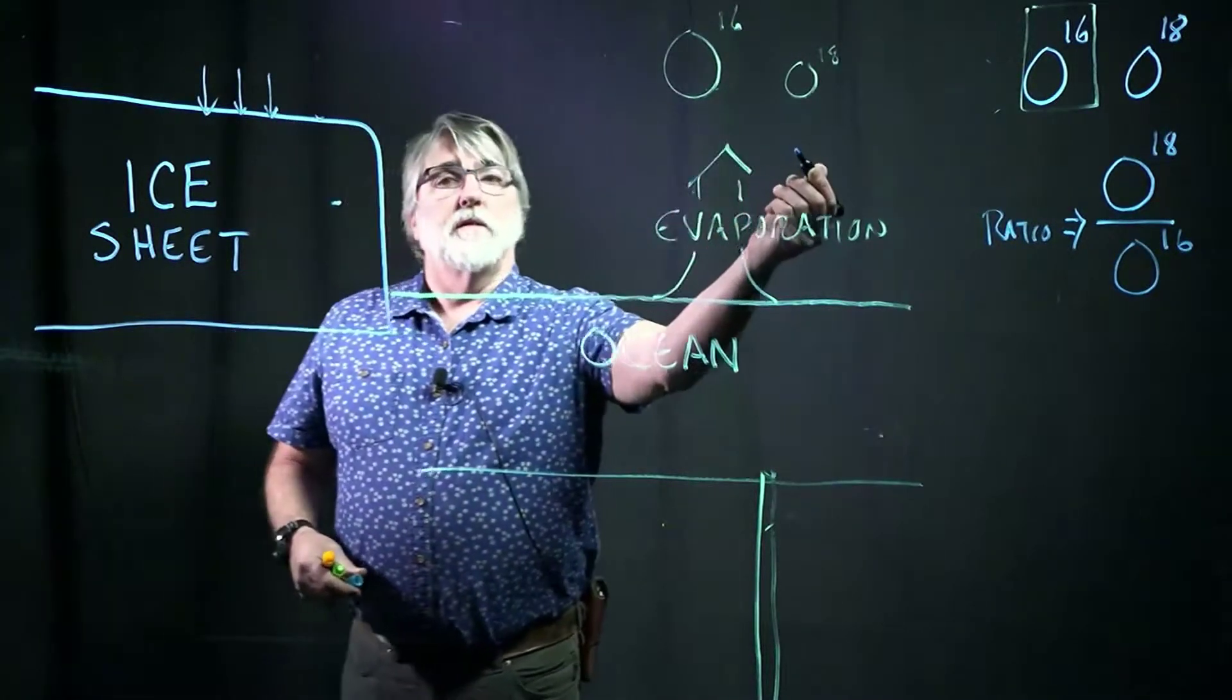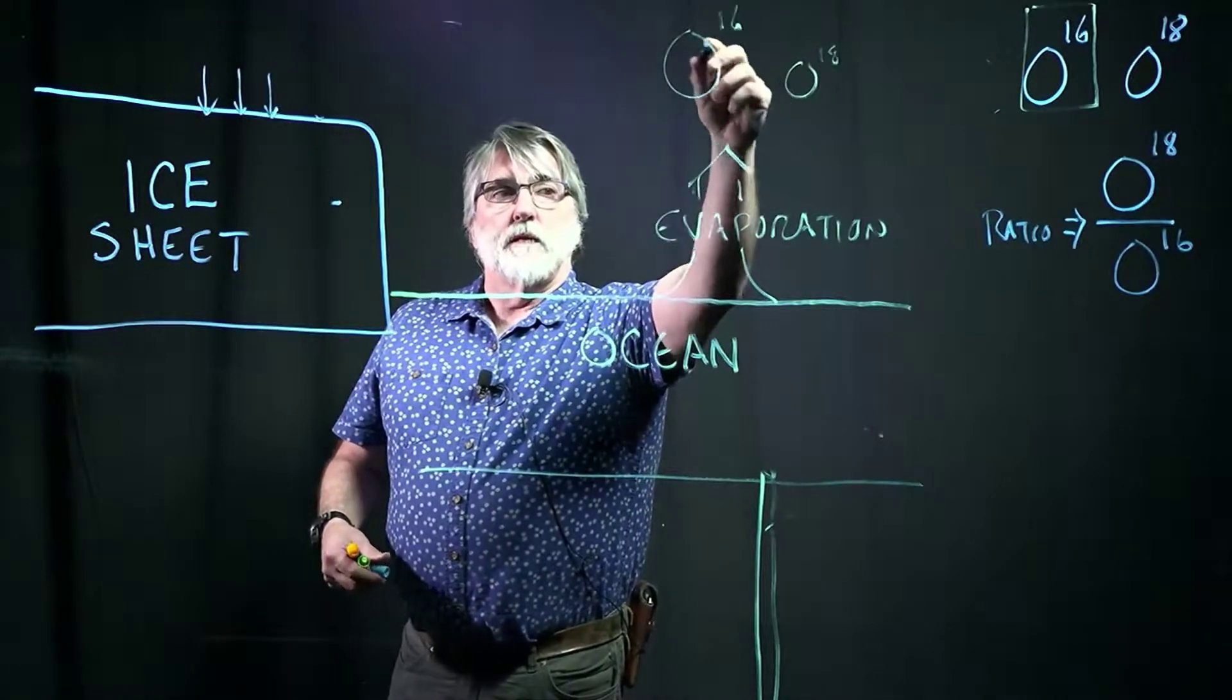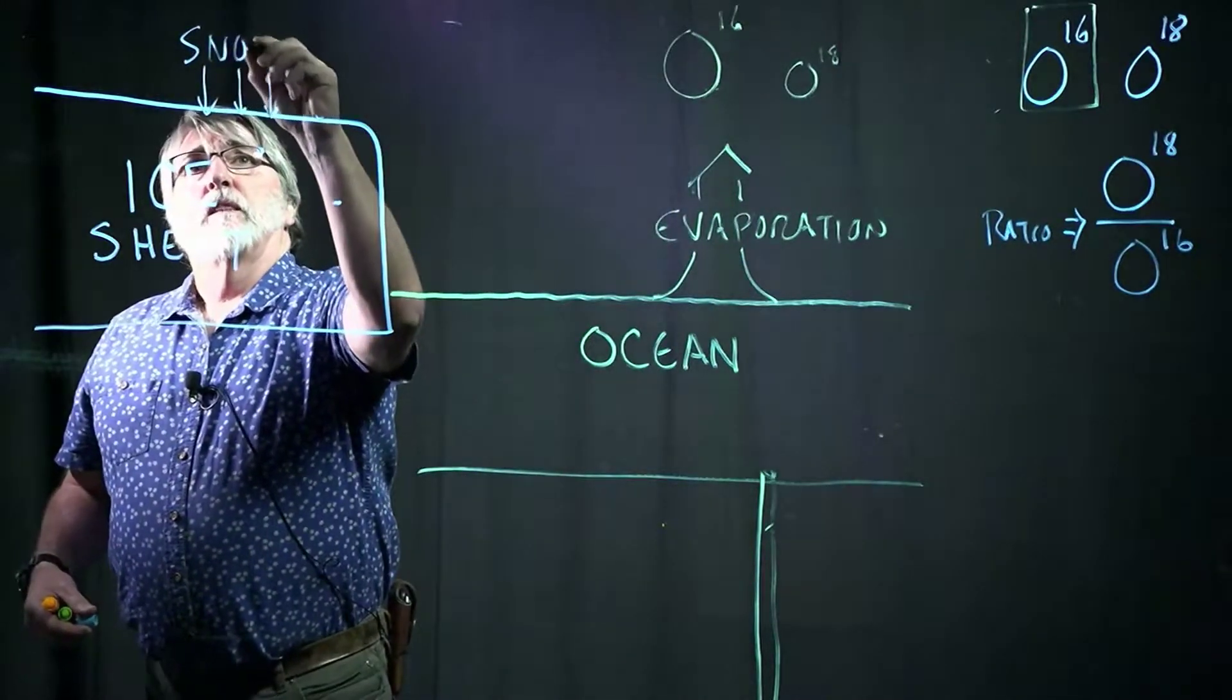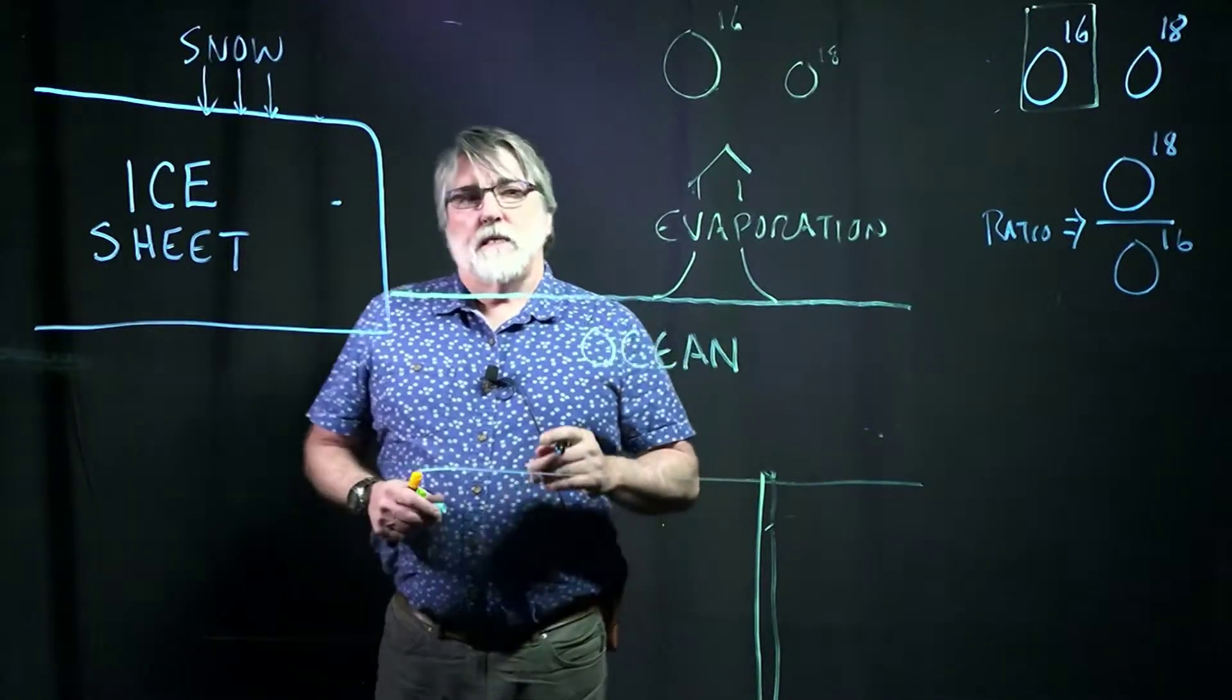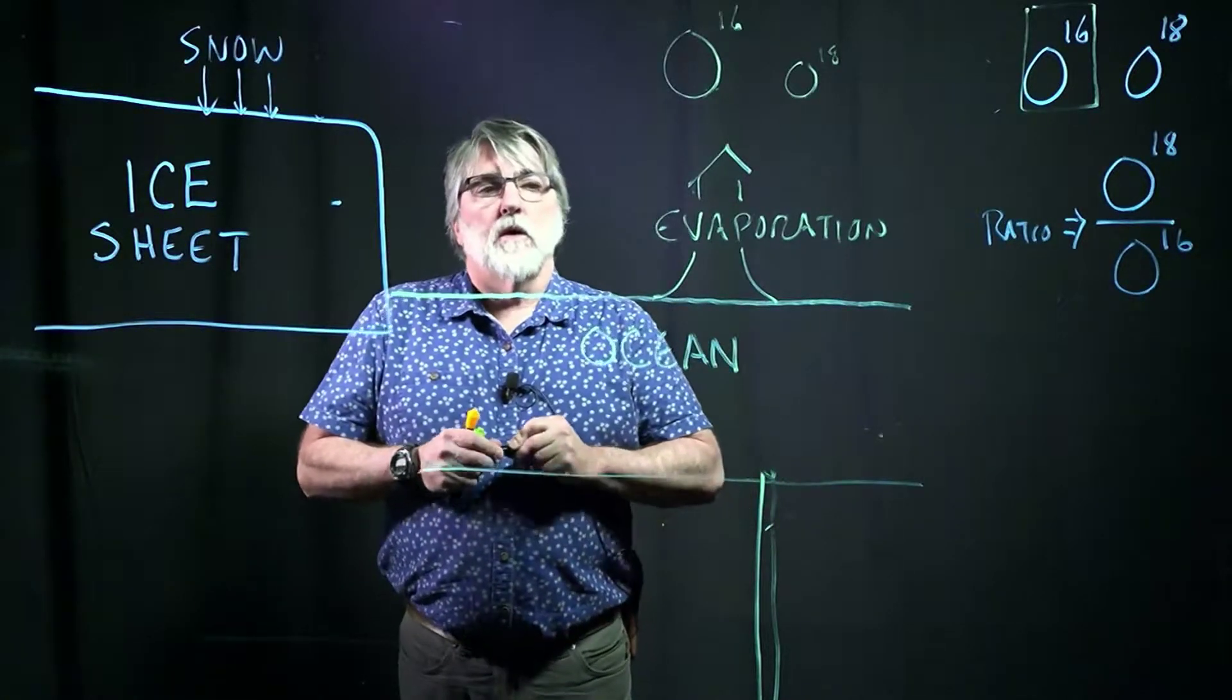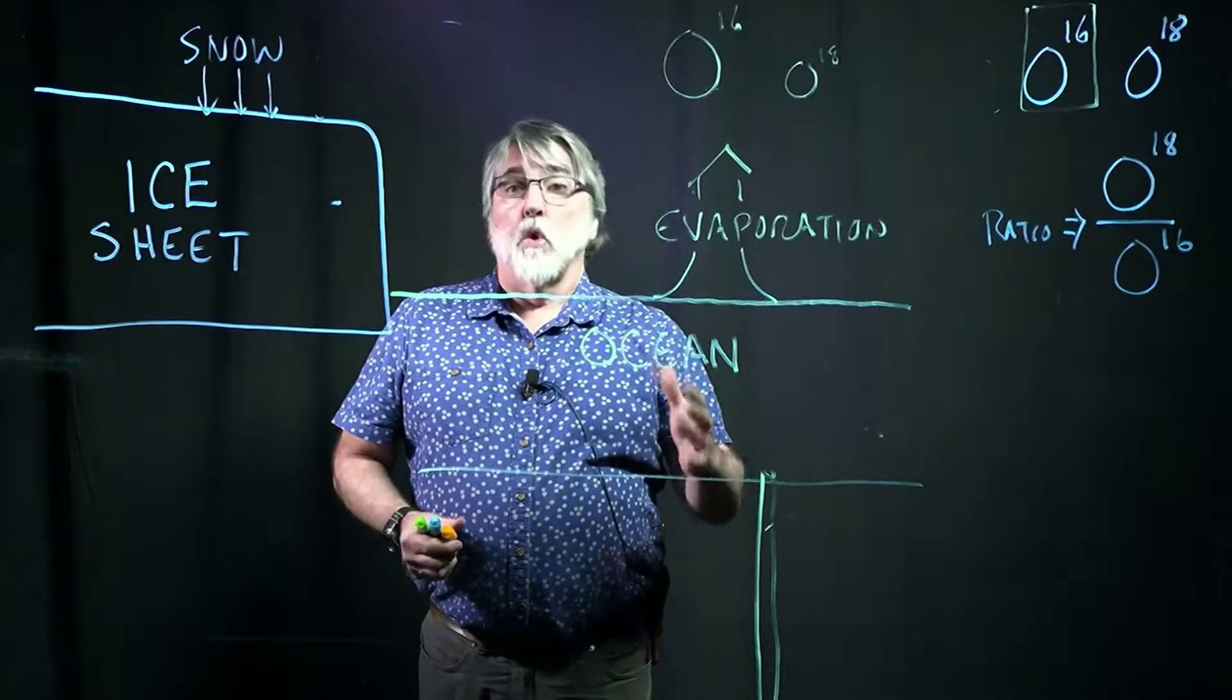And the water vapor is going to move from the equator toward the poles where there's rainfall and there's snow. And so the snow that eventually snows and makes ice over here in the glaciers is coming from this water vapor that has a lot of O16 in it. So we have snow over here that comes from that water vapor.